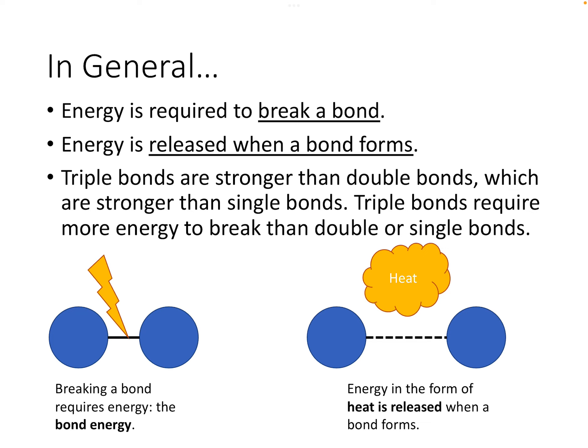In general, energy is required to break a bond. When we form a bond, the opposite happens — energy is released out into the universe, typically as heat. Breaking a bond requires energy equal to the bond energy, and forming a bond between two atoms releases energy in the form of heat. Keep in mind that triple bonds are stronger than double bonds, and double bonds are stronger than single bonds. So triple bonds require more energy to break than double bonds, which require more energy to break than single bonds.